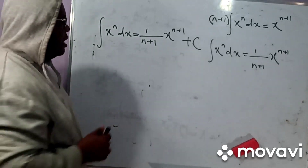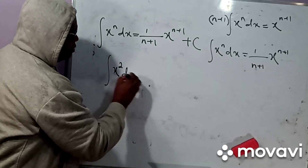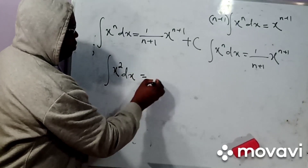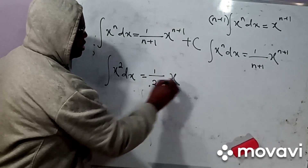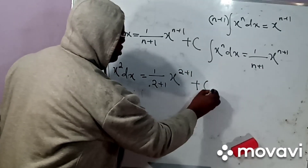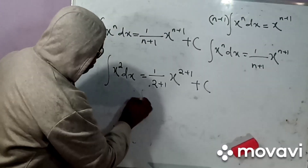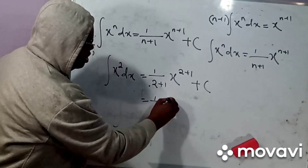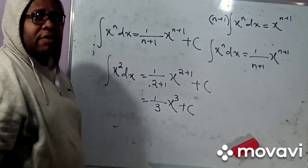Now let's take one or two examples. We are going to integrate X squared dx. If you want to integrate X squared, it is very simple. We simply have 1 over 2 plus 1, then X to the power 2 plus 1, plus a constant of integration. So 1 over 3, then X to the power 3, plus a constant of integration.